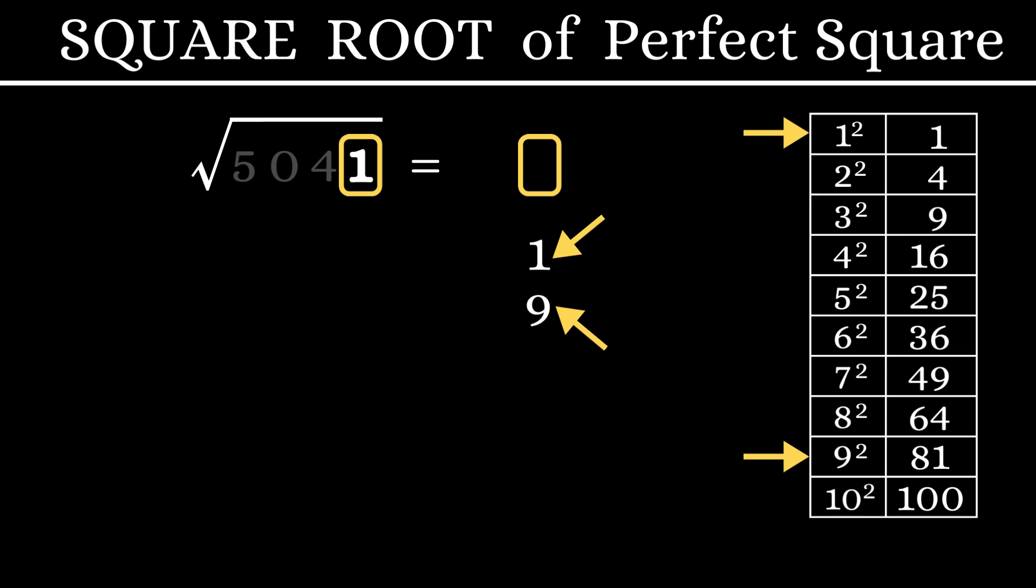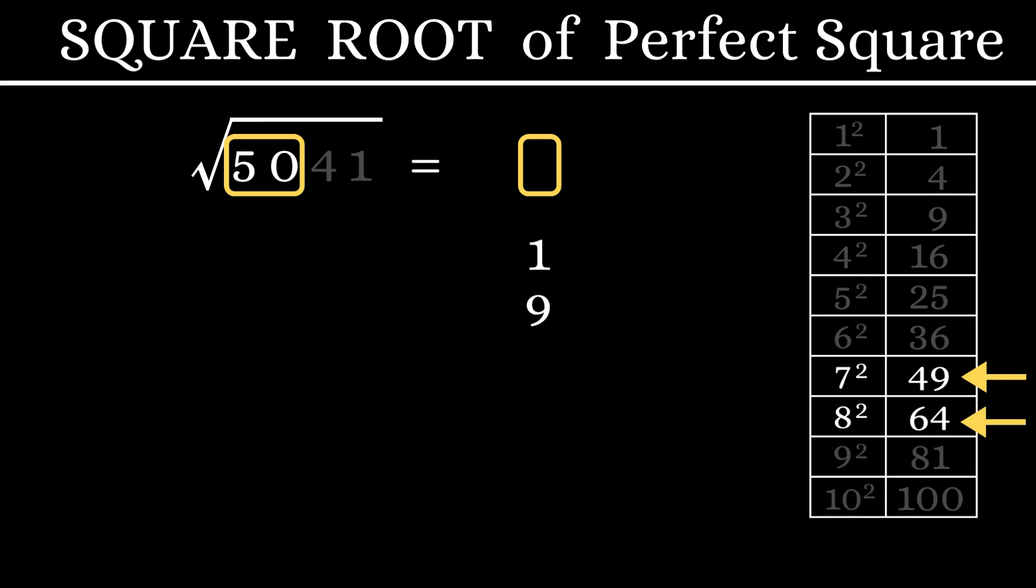Now, cut out the last 2 digits and consider only 50. 50 falls between 49 and 64, which is 7 squared and 8 squared. Remember, we will consider only the smaller number, 7. So, our answer should be either 71 or 79.